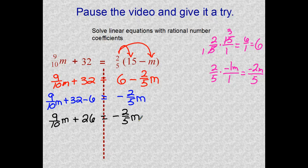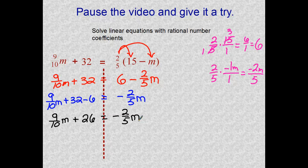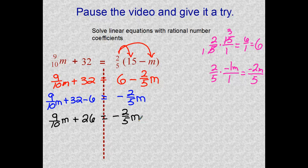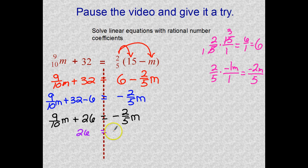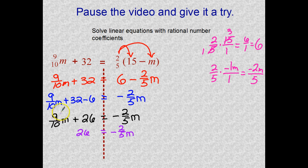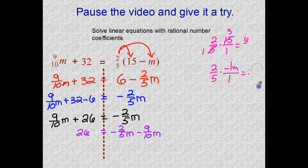Now I need to get our M's together and I'm going to have to bring the nine tenths M over to the right. It looks like I'll have to be subtracting that. That's going to get a little tricky, but I'm sure we can make that happen. So 26 is equal to negative two fifths M. This is what goes to the other side and becomes negative nine tenths M. I'm going to erase all this right here. We need some space.